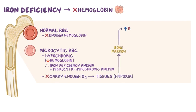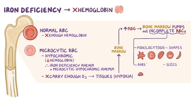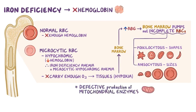Hypoxia signals the bone marrow to increase red blood cell production. And when even that increase doesn't help, the bone marrow goes into overdrive and pumps out incompletely formed red blood cells. As a result, red blood cells of various shapes, called poikilocytosis, and sizes, called anisocytosis, enter the circulation. In addition to anemia, iron deficiency also results in defective production of mitochondrial enzymes that generate necessary ATP for growth and development, and this affects fast-growing tissues the most, like hair and nails.